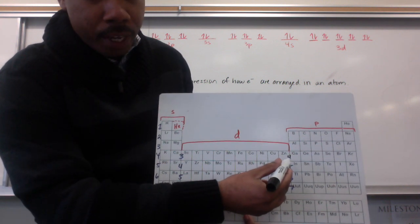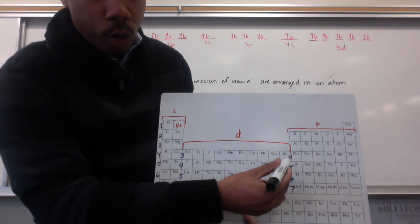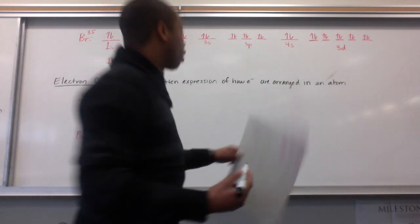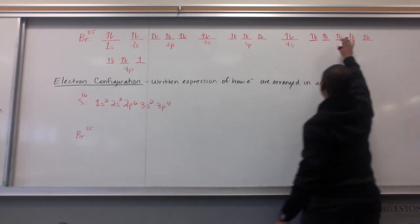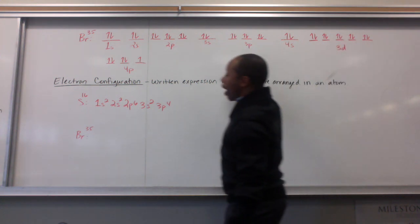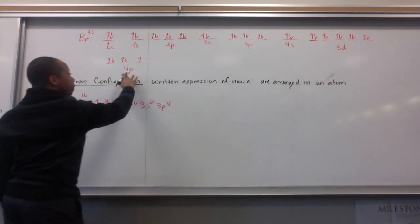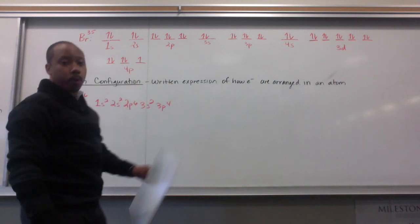When we come out of it, it's 4p again. So, we go back up to 4. So, 4p. So, we have 3d, 2, 4, 6, 8, 10, and then we come out of the d block, into the p block again, and we're going over to bromine.